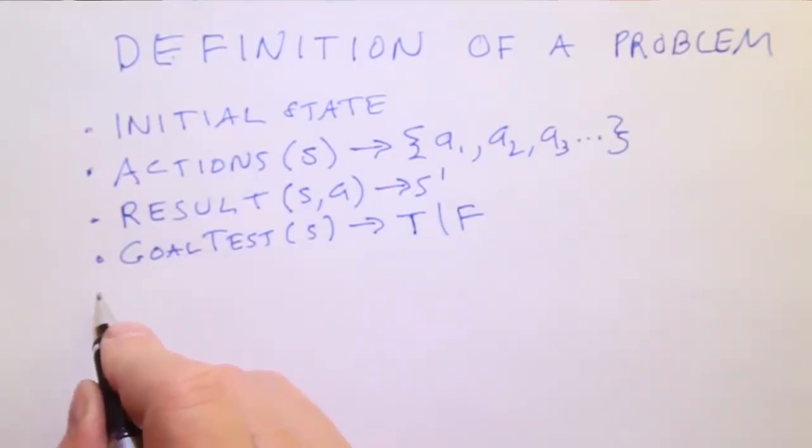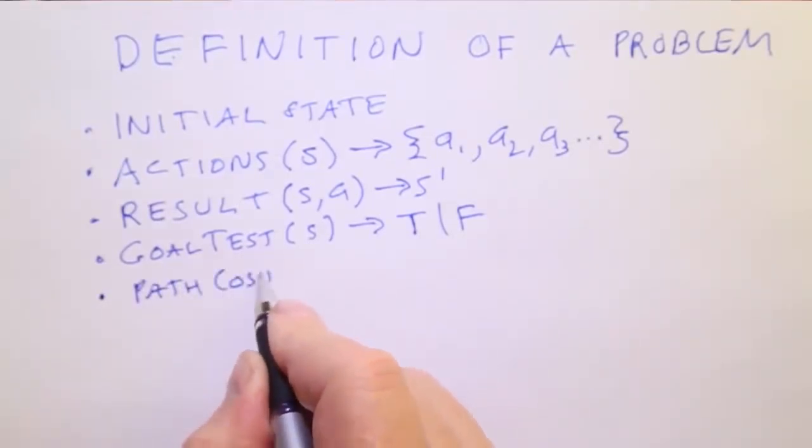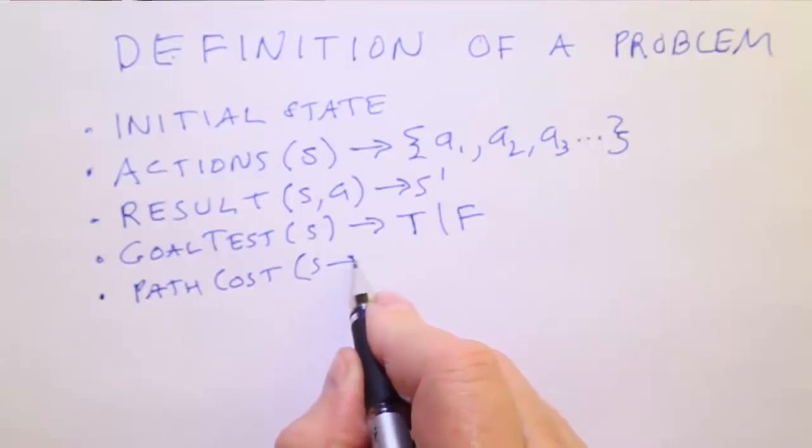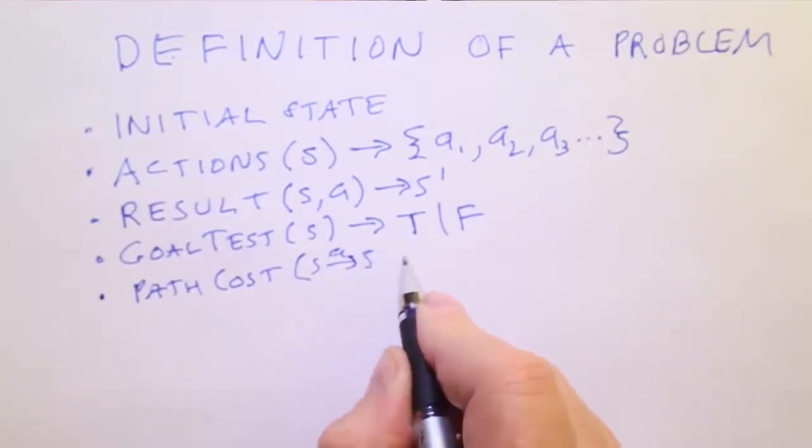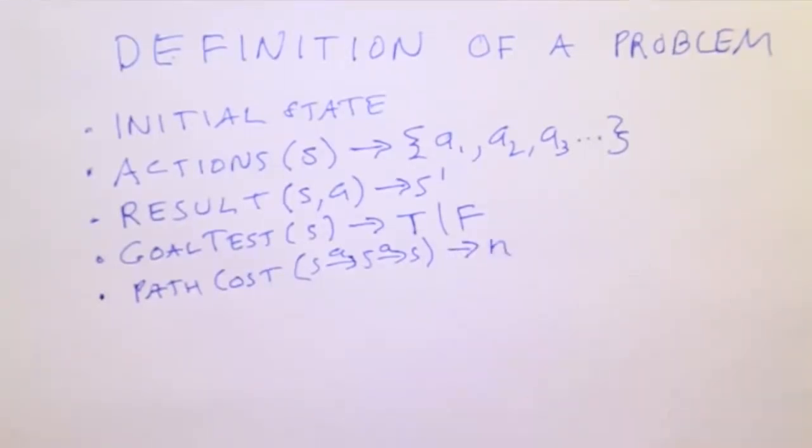Finally, we need one more thing, which is a path cost function, which takes a path, a sequence of state action transitions, and returns a number which is the cost of that path. Now, for most of the problems we'll deal with, we'll make the path cost function be additive, so that the cost of a path is just the sum of the cost of the individual steps. And so we'll implement this path cost function in terms of a step cost function.